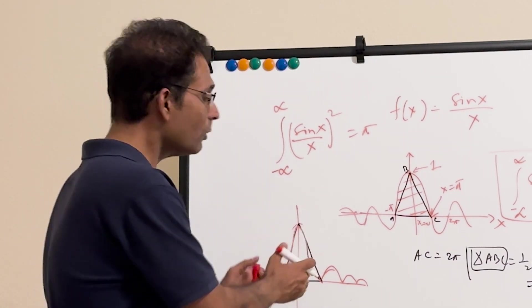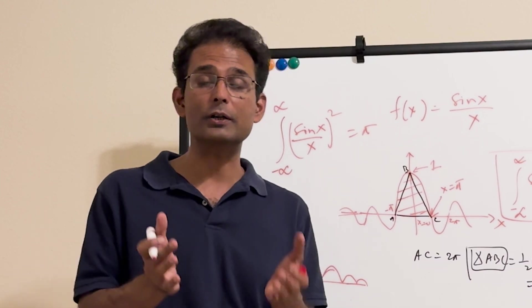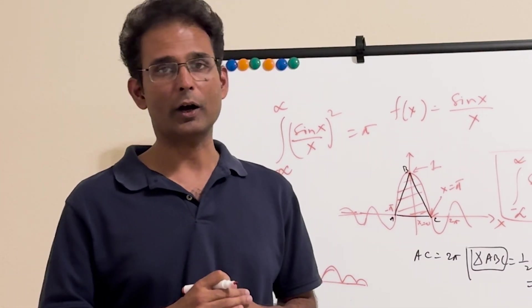And the triangle itself has an area of pi. So the main lobe has to be slightly shorter than the triangle. In other words, the main lobe has to be inside the triangle, alright?